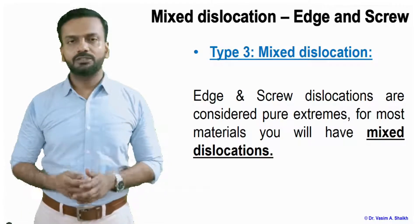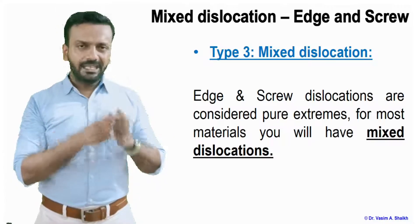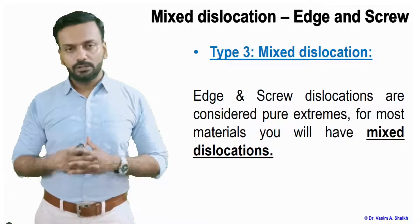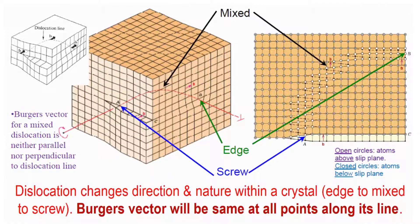The third type is mixed dislocation. Generally in any solid we don't have pure edge or pure screw dislocation — it is most often a combination of the two, and when these combine we get a mixed dislocation. In the image, the screw dislocation starts to form and comes out from the other side as an edge dislocation. It does not complete the line A to B as in a pure screw dislocation, but abruptly comes out from the edge surface. So from one point it is screw, at the end it is edge, and in the middle it is mixed dislocation.